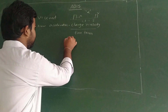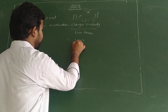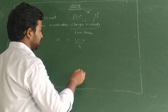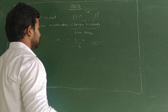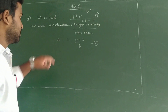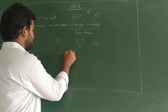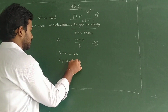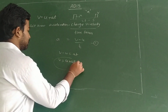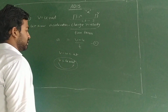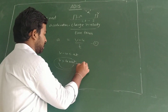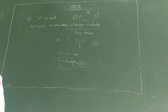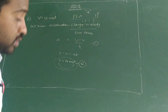So from the definition of acceleration, we get v = u + at. This is known as the velocity-time relation and it is the derivation of the first equation of motion.